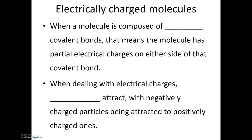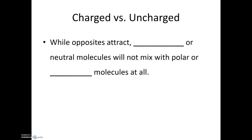When a molecule is composed of polar covalent bonds, that means the molecule has partial electrical charges on either side of that covalent bond. When dealing with electrical charges, opposites attract, with negatively charged particles being attracted to positively charged ones. While opposites attract, uncharged or neutral molecules will not mix with polar or charged molecules at all.